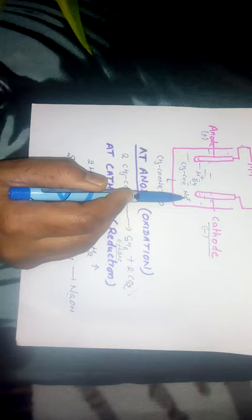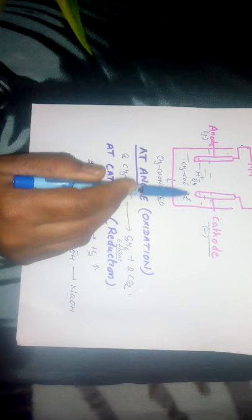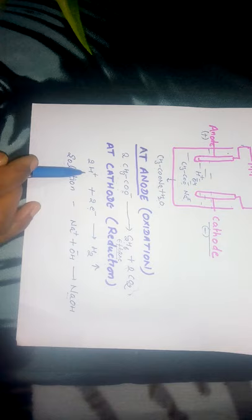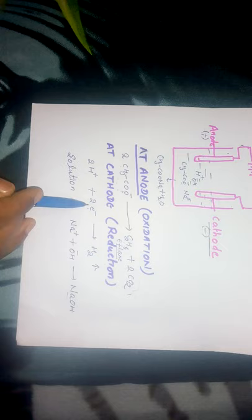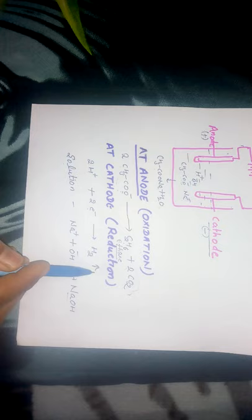At the cathode, positively charged species move — that is sodium ion and H⁺ ion. Since H⁺ ion has a lower discharge potential, H⁺ ion undergoes reduction — it gains electrons. 2H⁺ gains 2 electrons and hydrogen gas is liberated. The sodium ions remaining in solution combine with hydroxide ions to form sodium hydroxide.